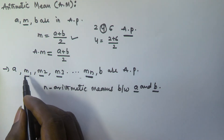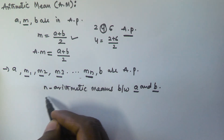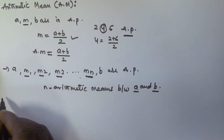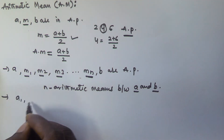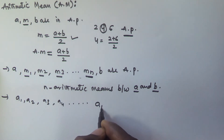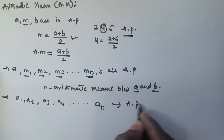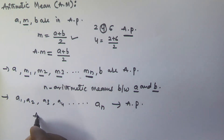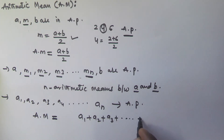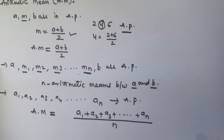If the given numbers a1, a2, a3, and so on up to an are in arithmetic progression, then the arithmetic mean of these numbers is given by AM = (a1 + a2 + a3 + ... + an) / n. This is the arithmetic mean of the given arithmetic progression series.